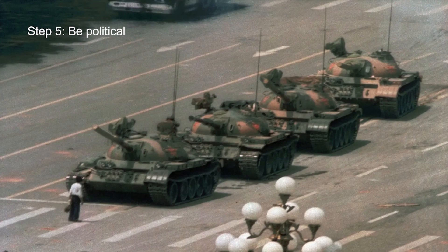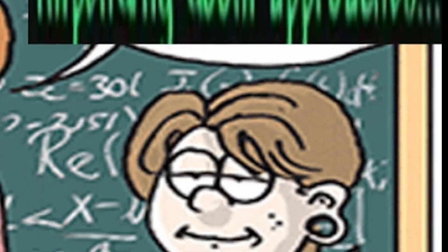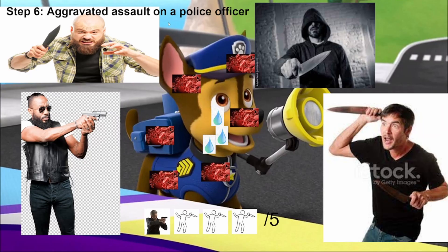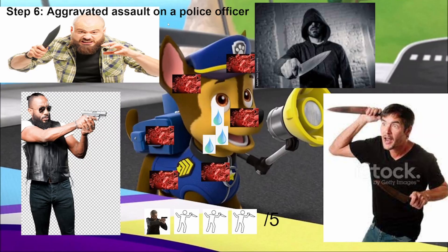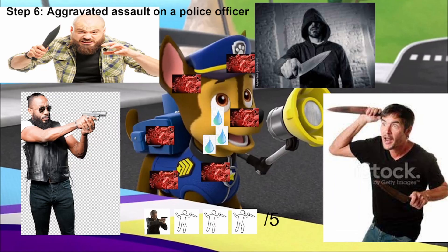Step 5: Be political. Politics is always welcome, especially when you're talking about sensitive topics — at times where family is relaxing while eating, watching TV, etc. Topics include war, famine, Cuba, the 2023 December 24th soul reaping, neoliberal, inventing doom of road trip. There's five stabbings and a shooting out of five. Or three stabbings out of five. It's pretty good.